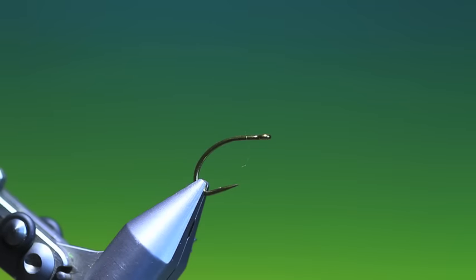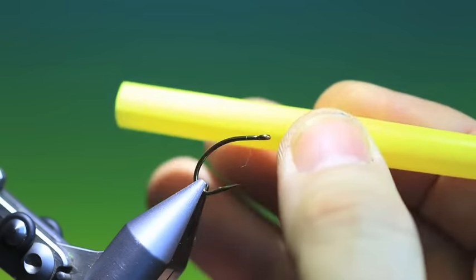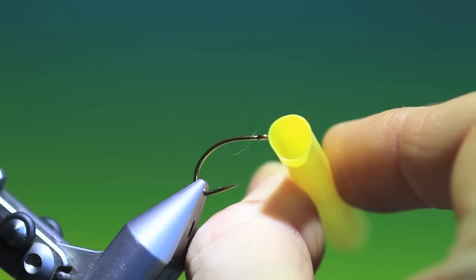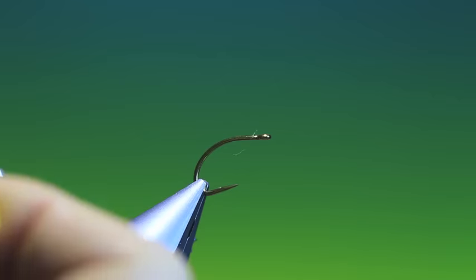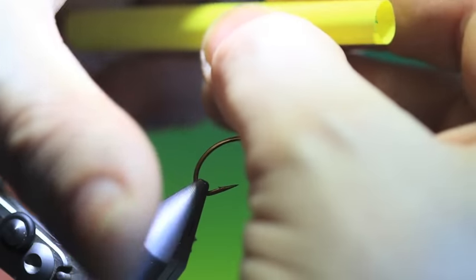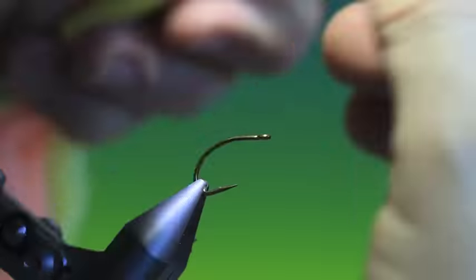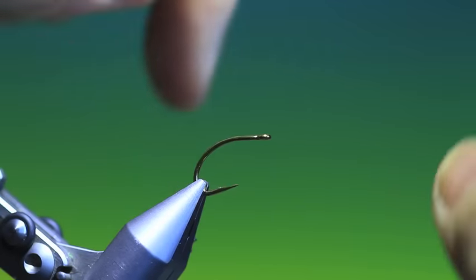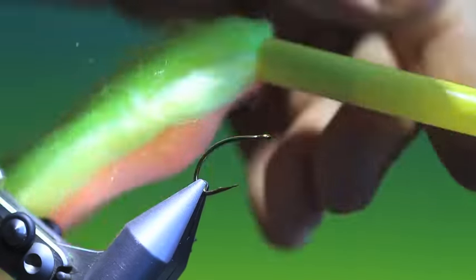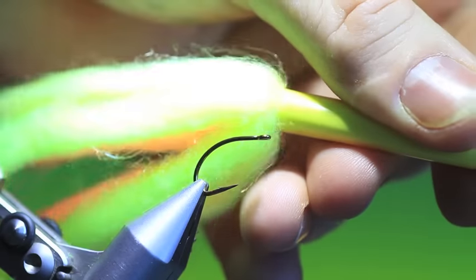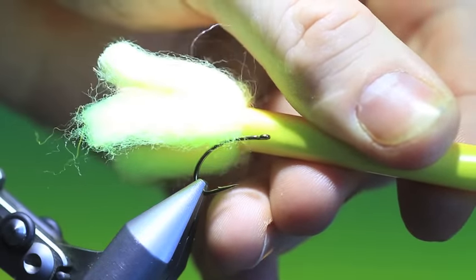Then you take a short length of a broad gauge drinking straw. You place your dental floss threader in and then you pull through the Glowbug yarn.